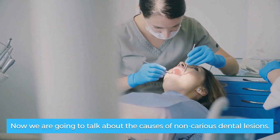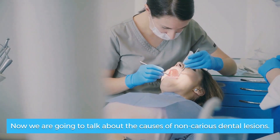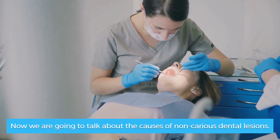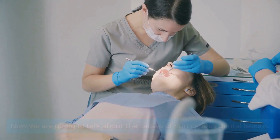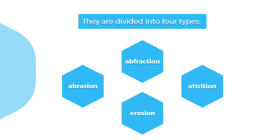Now we are going to talk about the causes of non-carious dental lesions. They are divided into four types: abfraction, abrasion, erosion, and attrition.